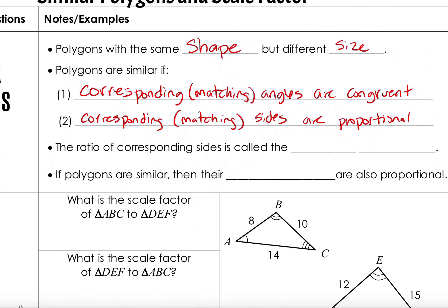If we have two polygons that are similar, they have the same shape but different size. The two facts are: the corresponding angles are congruent, and the corresponding sides are proportional. The ratio of the corresponding sides — how the sides are related from big to small or small to big — is called the scale factor.